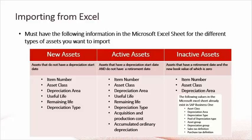For active assets, we need the item number, the asset class, depreciation area, useful life, remaining life, depreciation type, acquisition and production cost, and finally accumulated and ordinary depreciation.